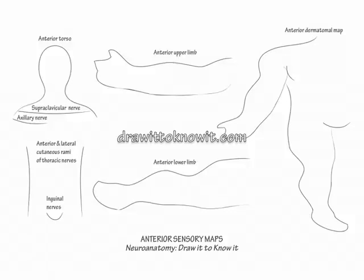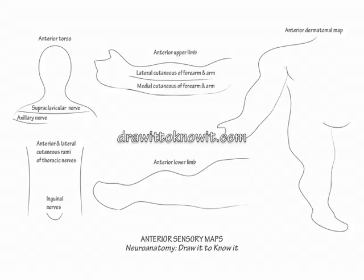Indicate the lateral cutaneous nerve of the arm, a radial nerve branch, and the lateral cutaneous nerve of the forearm, a musculocutaneous nerve branch, cover the lateral arm and forearm respectively. Then indicate the medial cutaneous nerve of the arm and the medial cutaneous nerve of the forearm, both branches of the medial cord of the brachial plexus, cover the medial arm and forearm respectively.